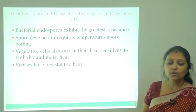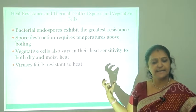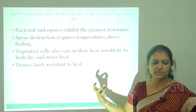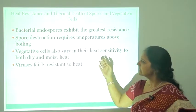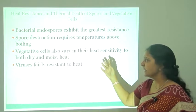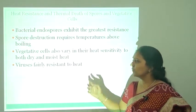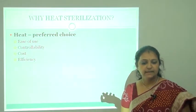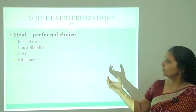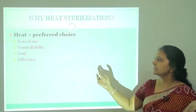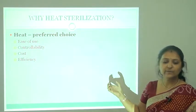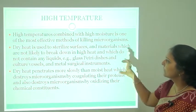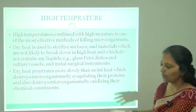Bacterial endospores are the most resistant to sterilization, requiring high temperature and high pressure. Vegetative cells are less resistant and more sensitive to both dry heat and moist heat. Viruses are fairly resistant to heat. Moist heat is the preferred choice because it is easy to use, easy to control, cost-effective, and works efficiently. High temperature combined with high moisture is one of the most effective methods for killing microorganisms.